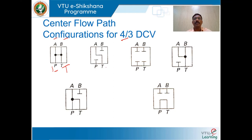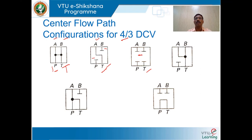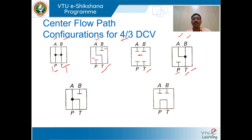In another center path configuration, port A is open to tank while ports P and B are blocked. In another configuration, all ports are closed. In yet another, A and B are open to the tank line but port P is blocked.